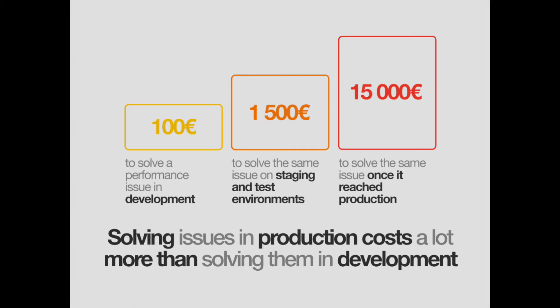Solving a performance issue in development is quite cheap — nothing is in production yet, so it's very easy to change the code to fix issues. But if you find a performance problem in a staging or testing environment, it costs a bit more. And if you find a problem once it reaches production, it costs a lot — you need to understand the problem, quickly find a fix, and deploy again. That can take a lot of time and stress for developers.